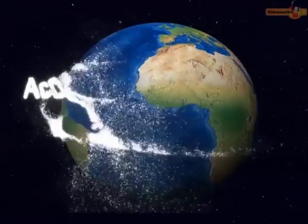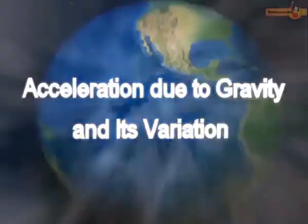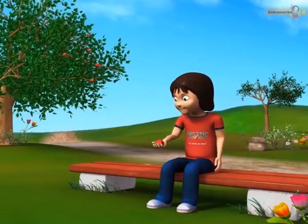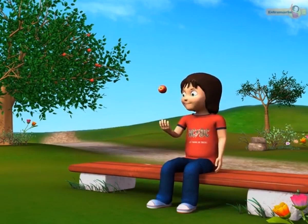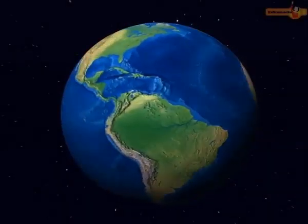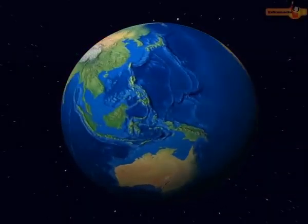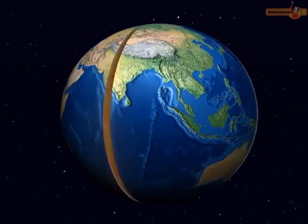Acceleration due to gravity and its variation. Why does an apple thrown upwards come down? Why does the speed of the apple increase as it comes down? It is because the earth attracts all the objects towards its centre with the force of gravity.